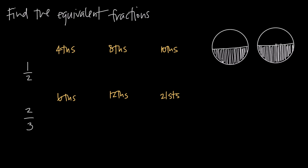Now, instead of describing how much pie I have in halves, I want to describe how much pie I have in fourths. We could take another pie where we also have 1/2 and divide it into fourths instead of halves. So we divide it into four pieces instead of two. We count how many we have — one, two — so we have two of the four total pieces. Two fourths, or two over four, is the same thing as one half.